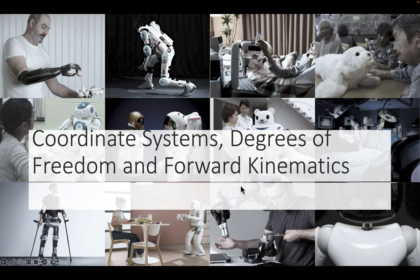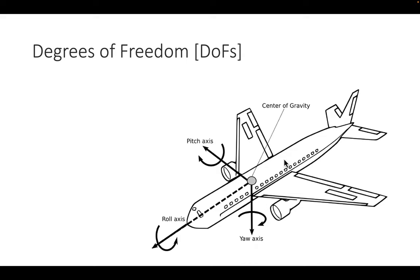Today we will talk about coordinate systems, degrees of freedom, and forward kinematics. Before we start, we want to introduce the term 'degrees of freedom.' This is a little confusing because some people think 'degrees' means angular degrees like three or five degrees — but no, degrees here means the extent of motions that you can perform.